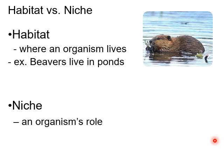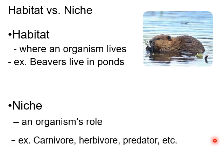A niche is an organism's role — what its job is in the habitat or environment. For example, grass's niche is to produce glucose, so it's a producer. A tiger's niche is to be a carnivore. A deer's niche is to be a herbivore and also a forager. A deer can also be a host to a parasite like a tick — so an organism can have more than one job or role.